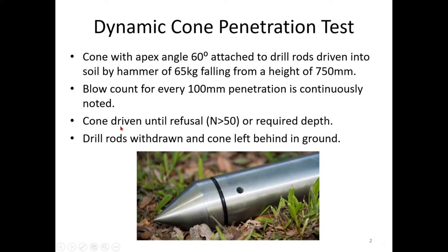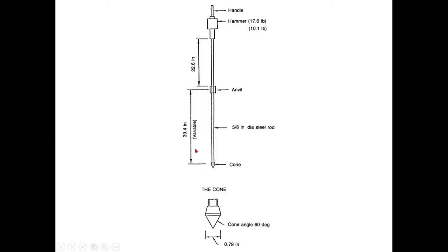The cone is continuously driven into the soil until the required depth or until refusal, same as SPT. Refusal is N greater than 54 per 100 mm penetration. Once you have reached refusal or the required depth, you withdraw the drill rod and the cone is left behind in the ground. An important difference from SPT is that you are not collecting any samples here.